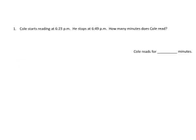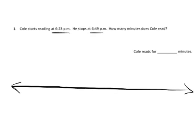So here's an example. Cole starts reading at 6:23 p.m., and he stops at 6:49. How many minutes does Cole read? So we're going to draw a number line here, and we know that 6:23, so way over here is 6 o'clock, and we know way over here would be like perhaps 7 o'clock.